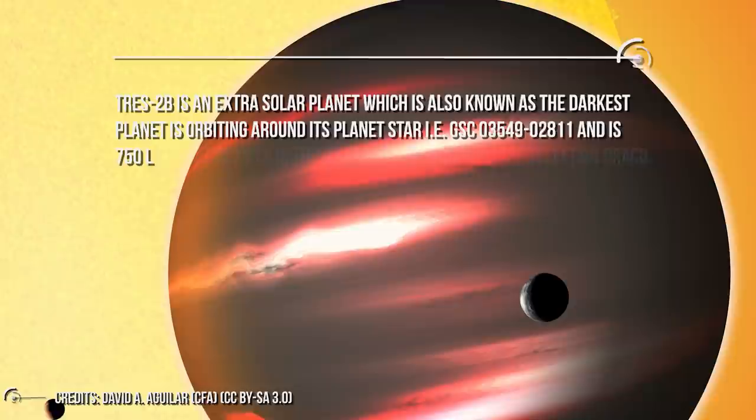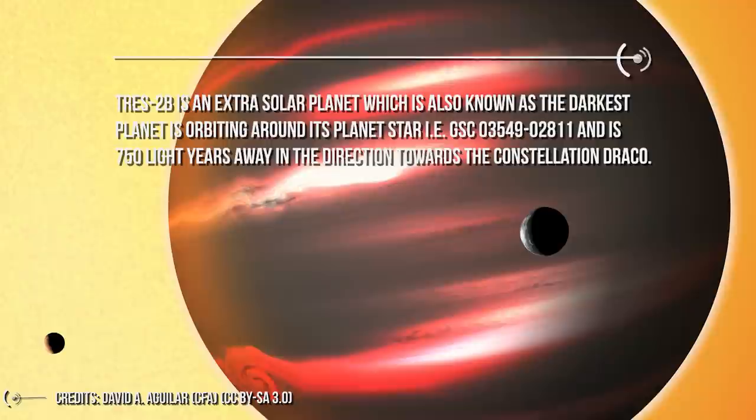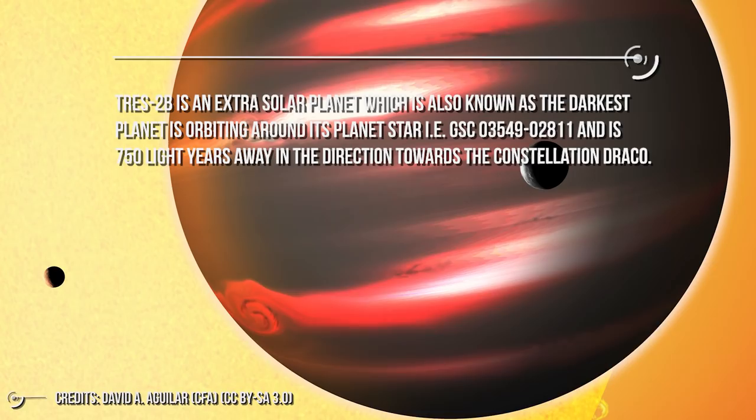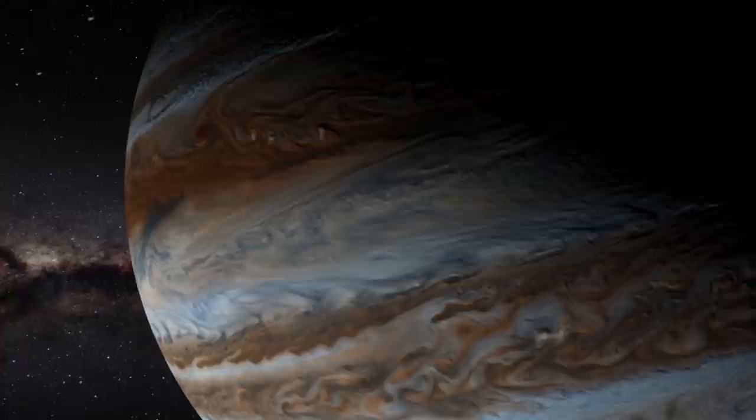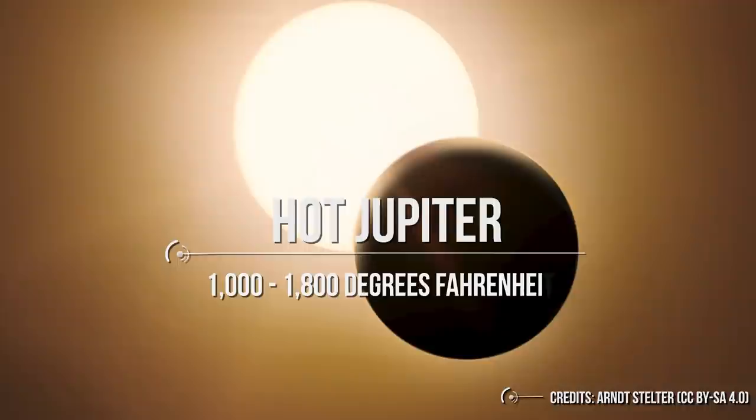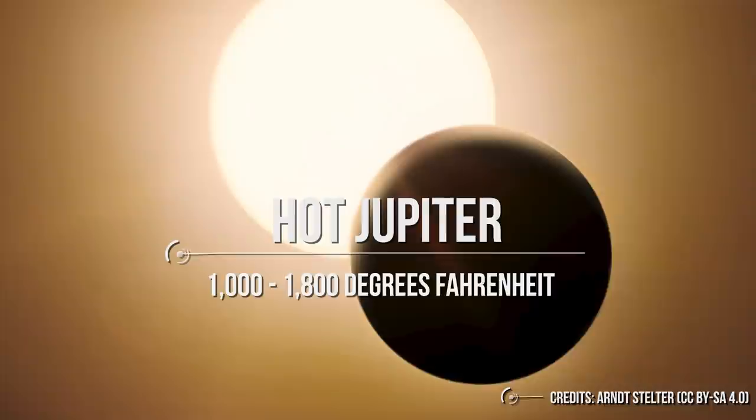TRAS 2b is an extrasolar planet which is also known as the darkest planet, orbiting around its parent star GSC 03549-02811 and is 750 light-years away in the direction towards the constellation Draco. The giant size and mass of this planet shows great similarities to that of Jupiter and is referred as Hot Jupiter, where the temperature ranges between 1000 and 1800 degrees Fahrenheit.